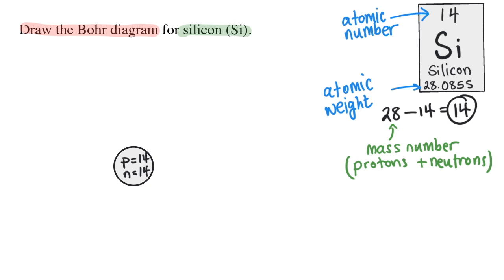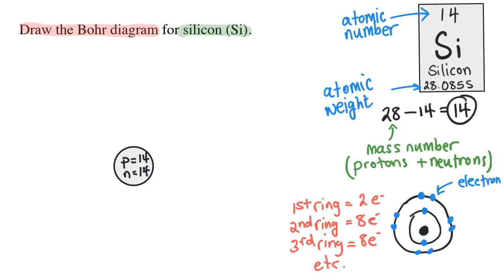Now I can show all the electrons. In the Bohr diagram, the electrons are drawn as little circles on a ring. Each ring can hold a certain maximum number of electrons. The first ring can hold two, and then each ring after that can hold eight.